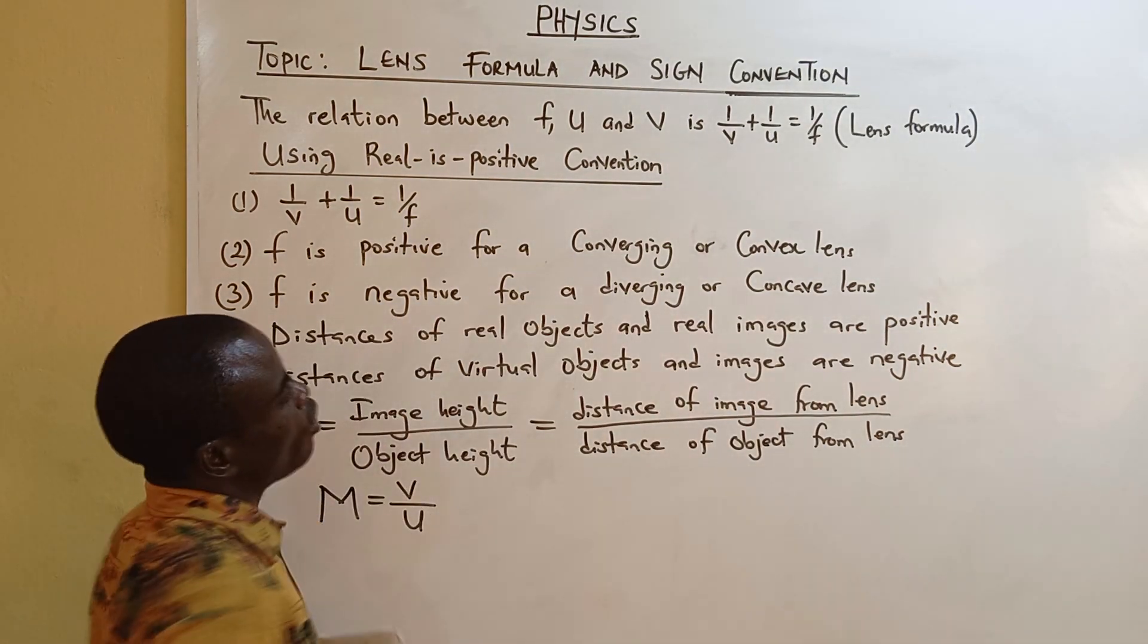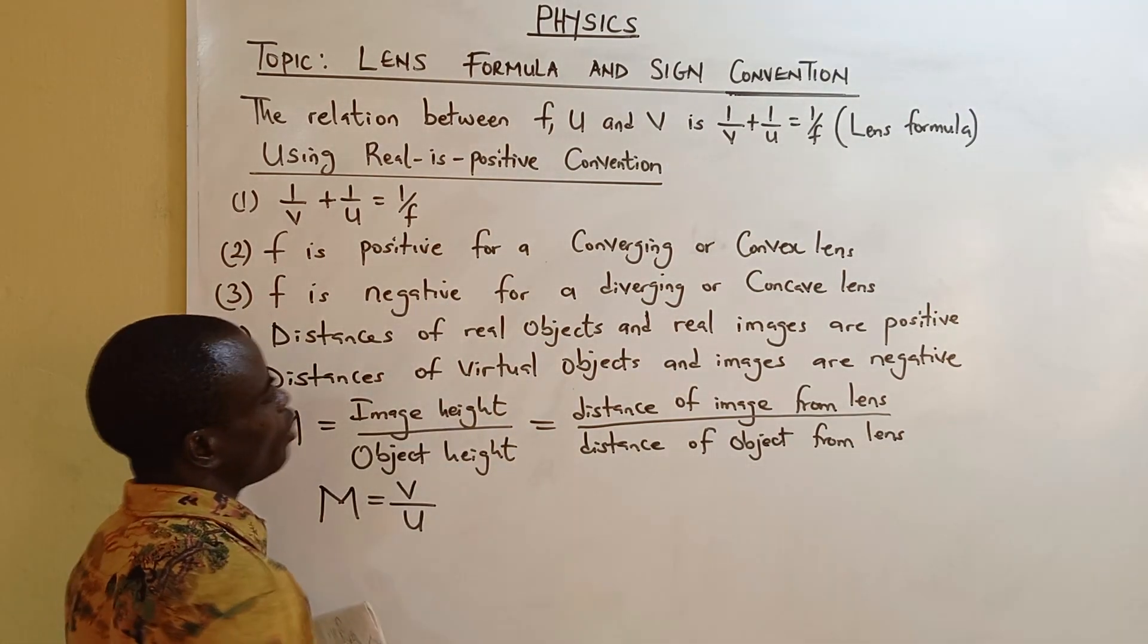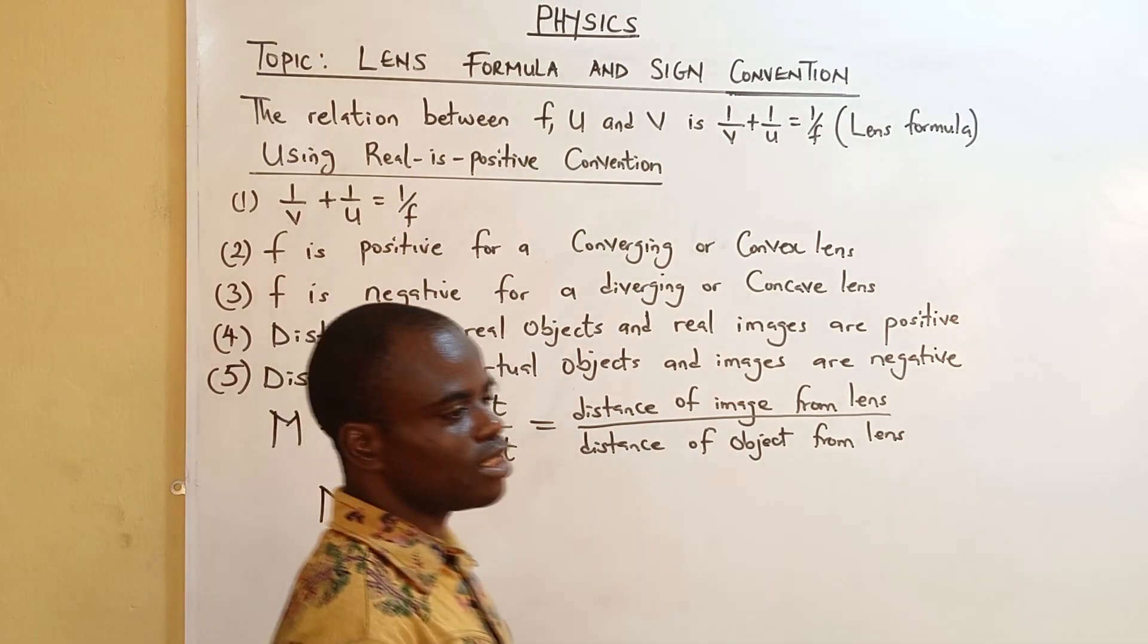And the distance of real object and real images are positive. Distances of virtual objects and images are negative.